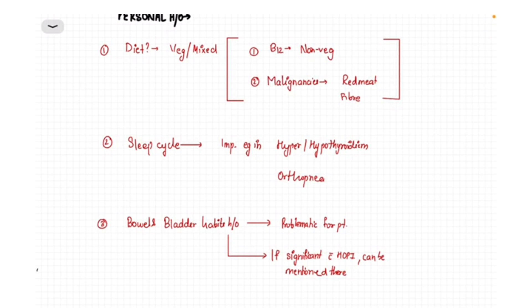Third is the bowel and bladder habits which you should also ask. These can be some problematic conditions for the patient which should also be treated, and they also might point towards a cause. And if there are significant findings, then they should be mentioned in the HOPI itself, like if you are suspecting it to be a case of intestinal obstruction, then history of constipation should be mentioned in the HOPI only and not in the personal history.